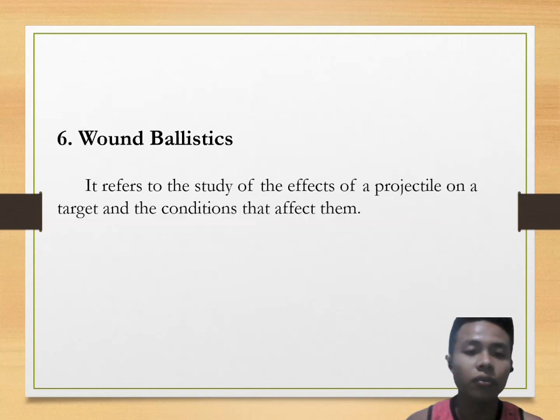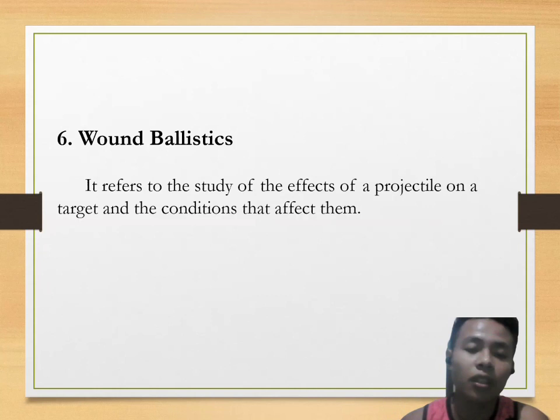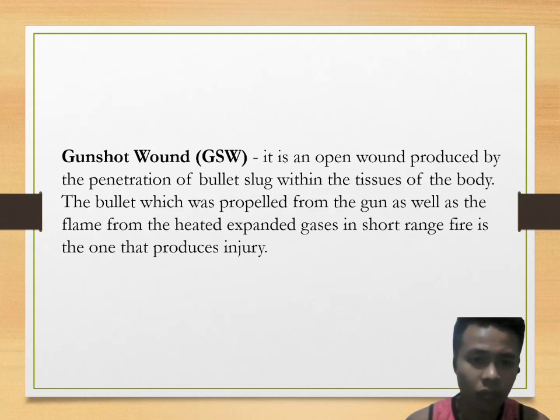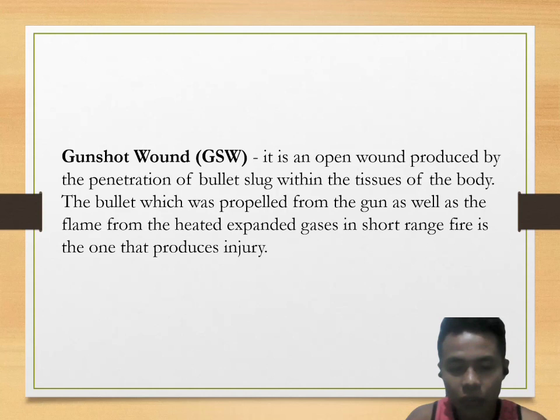Wound ballistics refers to the study of the effects of a projectile on a target and the conditions that affect them. A gunshot wound is an open wound produced by the penetration of a bullet or slug within the tissues of the body. The bullet propelled from the gun, as well as the flame from the heated expanded gases in short-range fire, produces the injury.